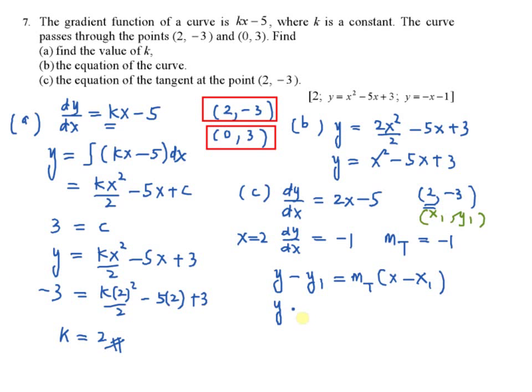You have y minus negative 3. It becomes plus 3. The gradient of tangent is negative 1, x minus 2. So this will give you negative x plus 2. So the equation of tangent,